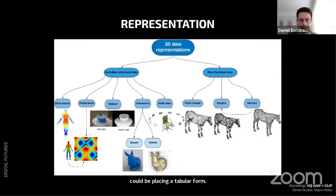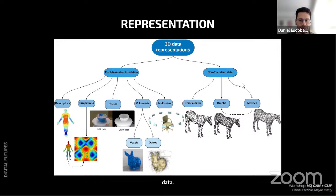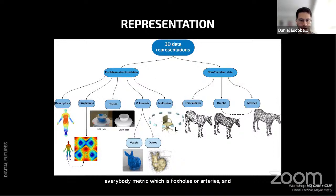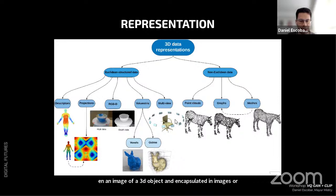For 3D representations, data can be split into Euclidean structured data — such as projections, RGBD (RGB image plus depth map), volumetric voxels or octrees, and multi-view cameras — and non-Euclidean data such as point clouds, meshes, and graphs.